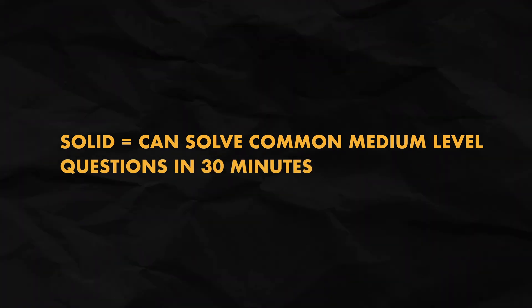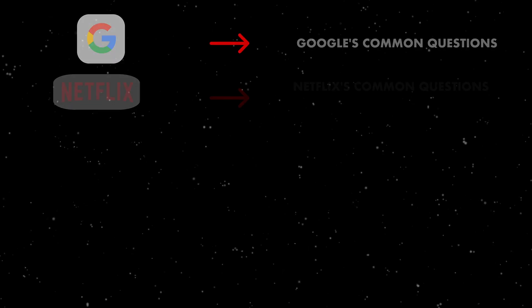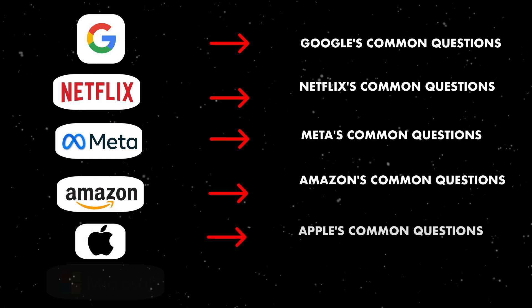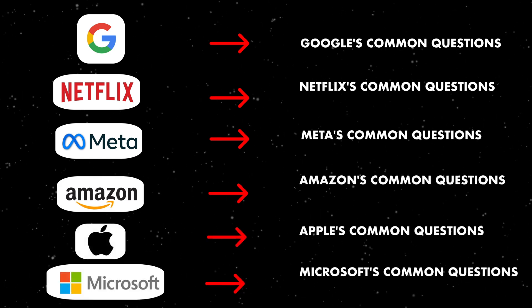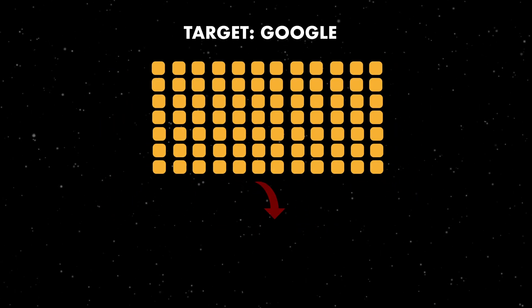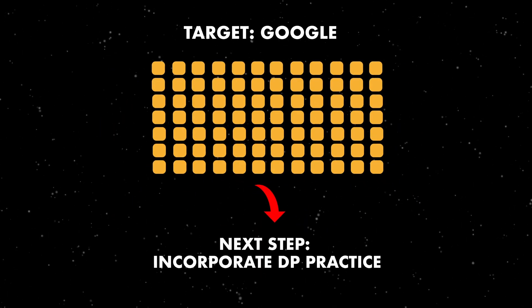Once you're solid in the core topics, only then invest time in anything else — but don't do it randomly. Do it based on the specific company you're targeting. See what are the most asked topics at that company that are generally less common and practice based on that. For example, if you want to get into Google after these 12 weeks, you would start working on dynamic programming as well.